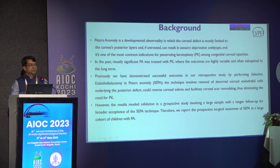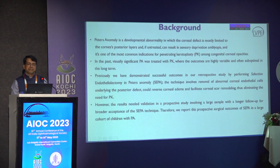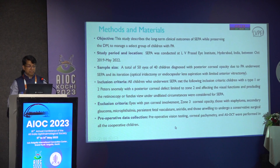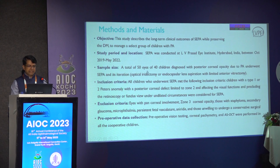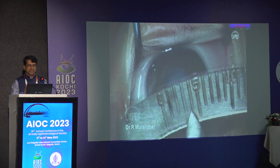The retrospective study showed favorable outcomes, but in order to validate this, we went for a prospective clinical trial — a much more well-controlled trial with a single surgeon. It started in October 2019, just before COVID, and 50 eyes have had at least six months of follow-up. SEPA can be combined with iridectomy when the defect is larger, or lens removal when there is a type 2 abnormality.